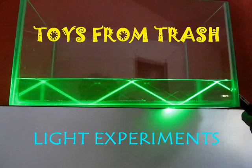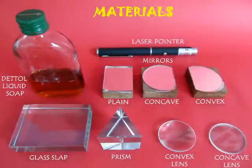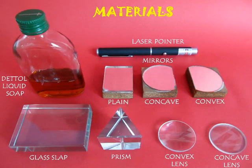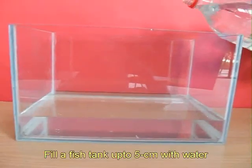Often experiments on light are shown with ray diagrams on the blackboard. This is not a good way. Using glass slabs, prisms, and lenses, you can show them much more graphically.